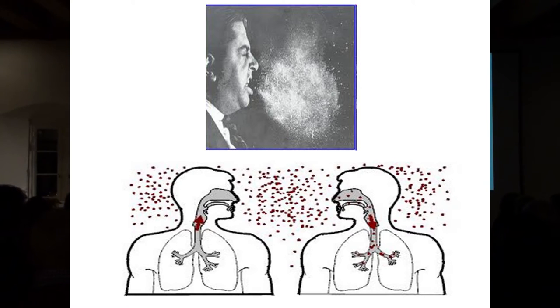Gleichzeitig werden diese Lungen in Sprühmaschinen verwandelt, die dann diese TB-Bakterien sehr effizient in die Umwelt versprühen und so die Krankheit weitergeben. In der Tat ist die Tuberkulose in erster Linie eine luftübertragene Krankheit. Das heißt, Patienten husten, sprechen, singen vielleicht sogar und geben so ihre TB-Keime in die Umwelt weiter. Und so springen sie dann auch von einem Patienten auf den nächsten.